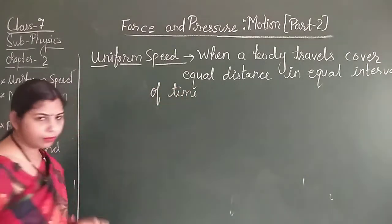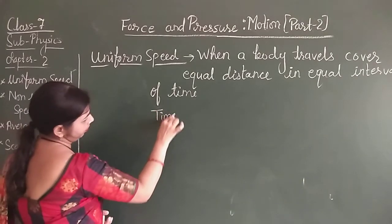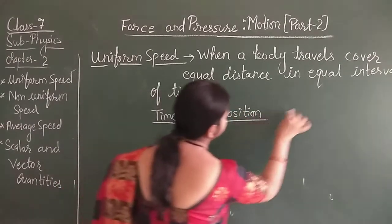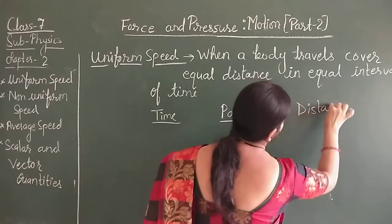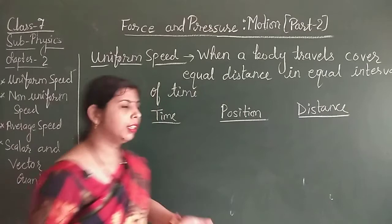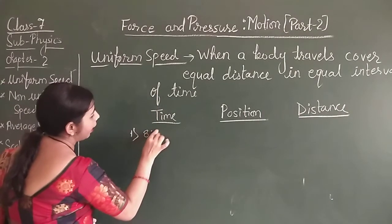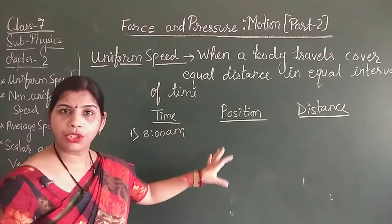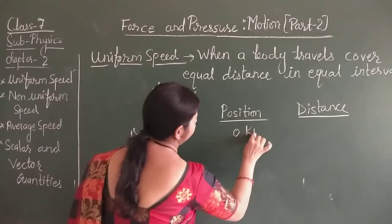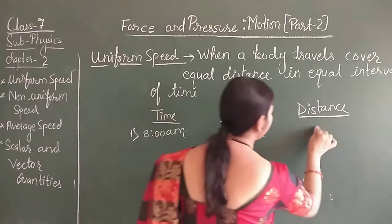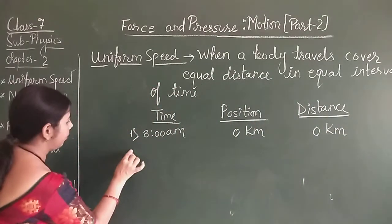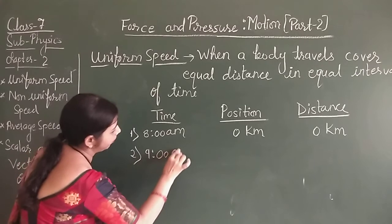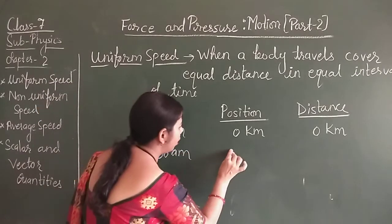For example, you can take 3 things: first, time; position; and distance. Suppose the time is now 8 a.m. — that means this is the starting time. When the time is starting, the position is at 0 kilometers, so distance is also 0 kilometers. Now, in the next one hour, that means at 9 a.m., suppose the body travels 20 kilometers.